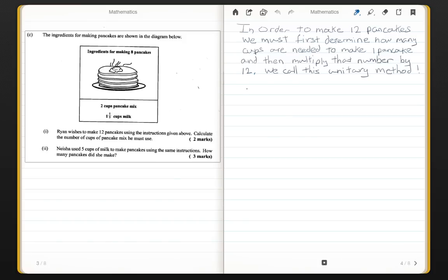For part 1, we know that 8 pancakes is made from 2 cups of mix. Now, let's find out how much mix is required for 1 pancake. You simply divide both sides by 8. Therefore, 1 pancake is made by 2 eighths mix.